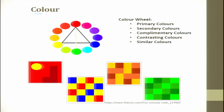The color wheel is important. It includes primary colors, secondary colors, tertiary colors, complementary colors (opposite on the wheel), contrasting colors, and similar colors. You look at the color wheel and choose colors for your drawing accordingly.